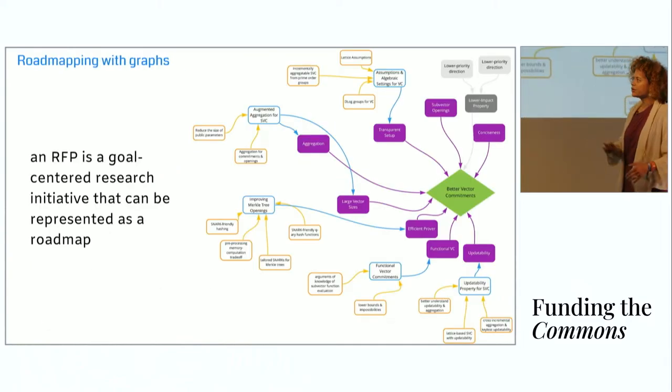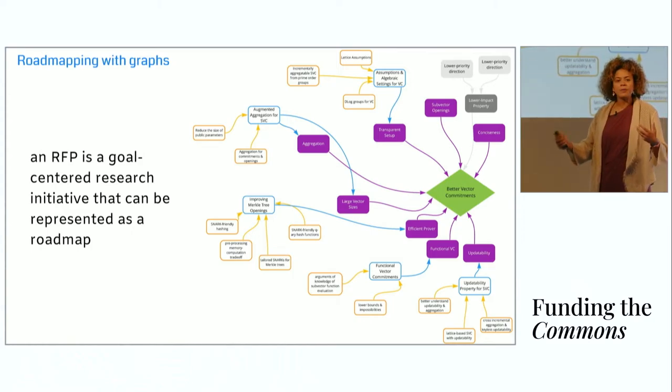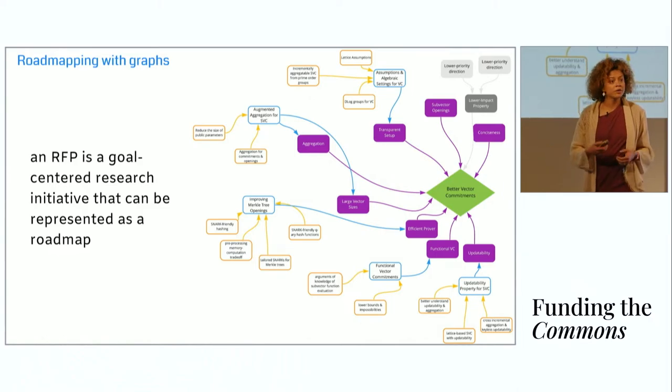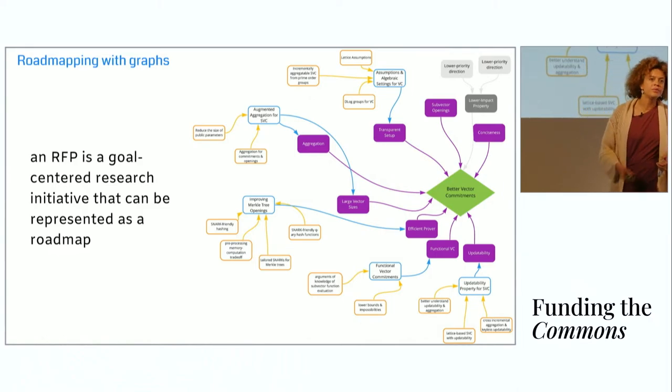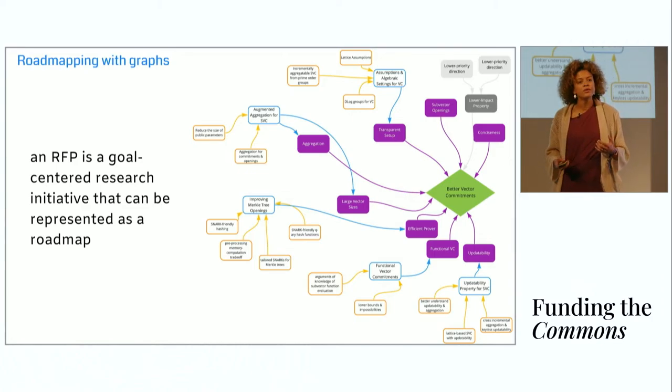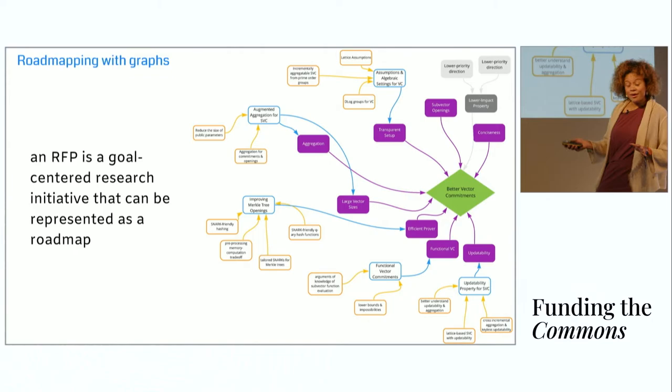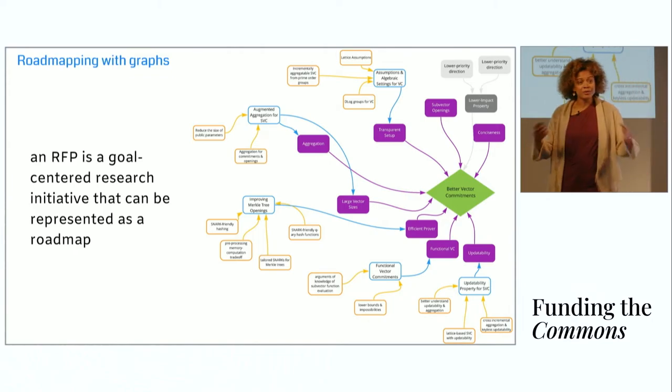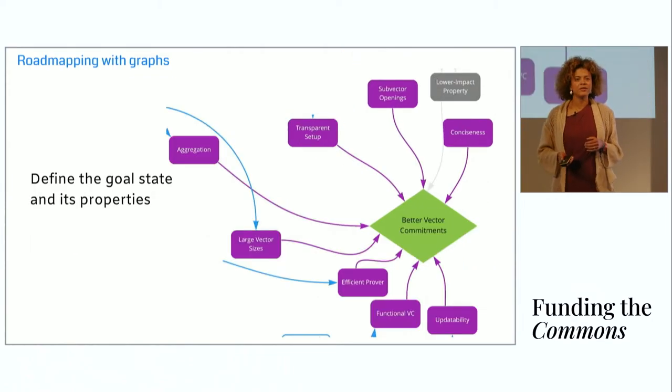I'm going to describe how this works in the context of, as an example, an RFP. In fact, an RFP that was developed and funded by the CryptoNet Lab at Protocol Labs last cycle. Just using this as an example, this roadmap was derived from the RFP. The RFP was not developed explicitly as a roadmap, but I think it's a good illustration of how, because an RFP is a goal-centered research initiative, it can be represented as a roadmap. Any errors in the diagram are solely my own fault, and I apologize in advance to CryptoNet Lab.